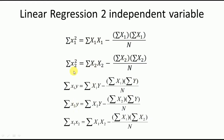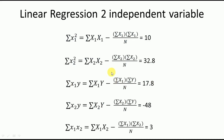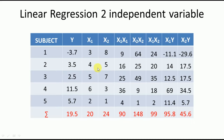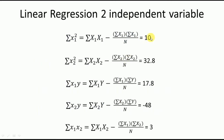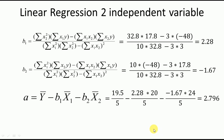Substituting those table values into the variance formulas gives: Σ(x1²) = 10, Σ(x2²) = 32.8, Σ(x1y) = 17.8, Σ(x2y) = −48, and Σ(x1x2) = 3.